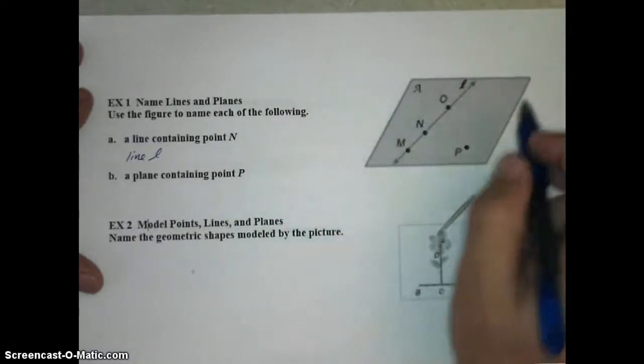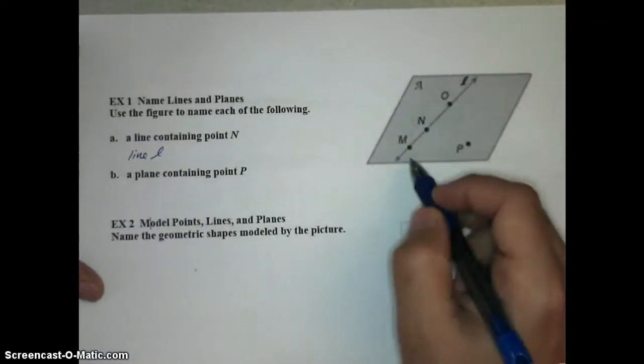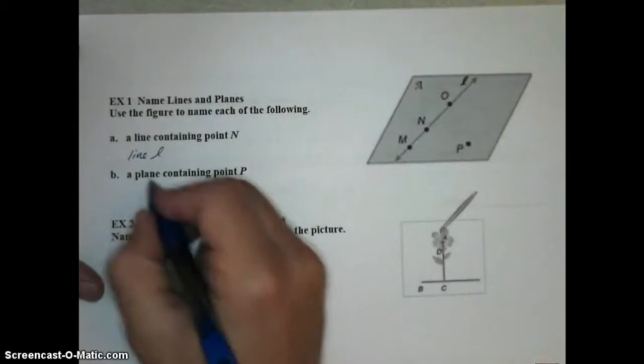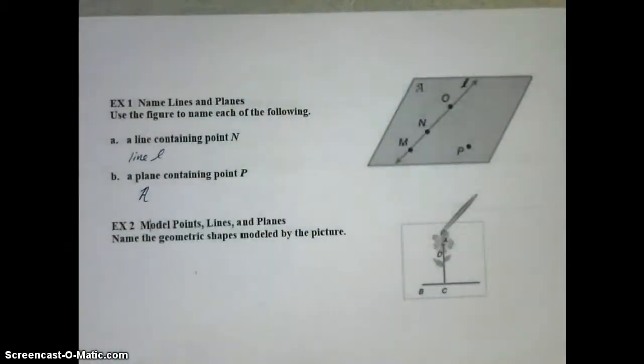Let's talk about a plane containing point P. Point P is not on line L, but it is in plane A. So there's my script A. You could have drawn a cursive A or any other curly letter as long as it's capitalized.